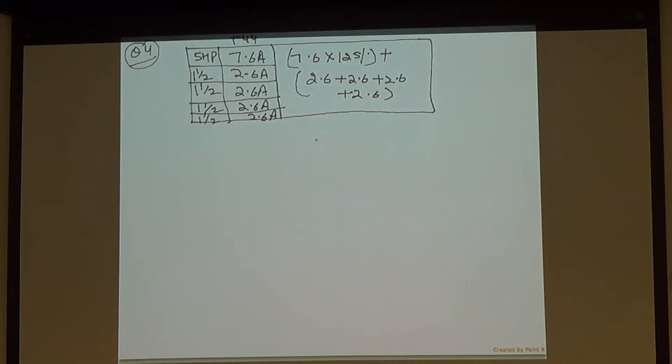So for you, you're going to multiply 7.6 with 1.25. 9.5 and then add 2.6 four times with it. What is 2.6 times 4? Could be 19.9 or 20?